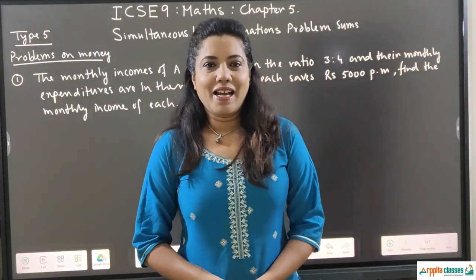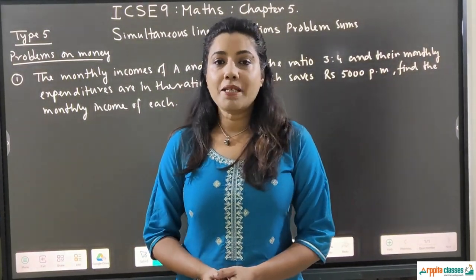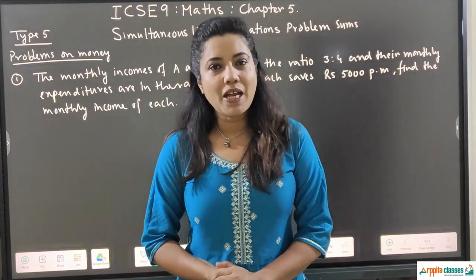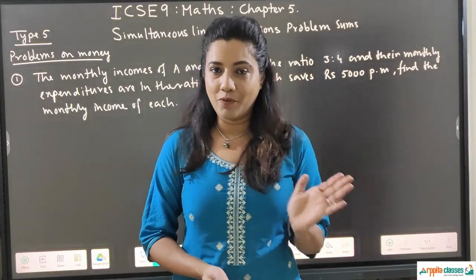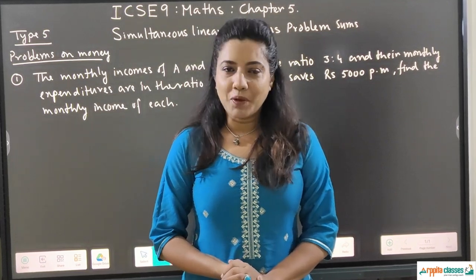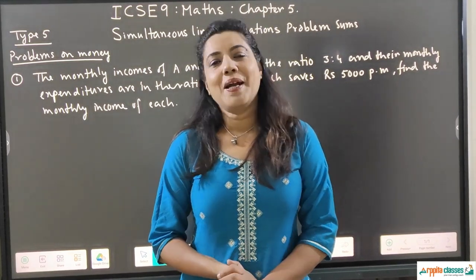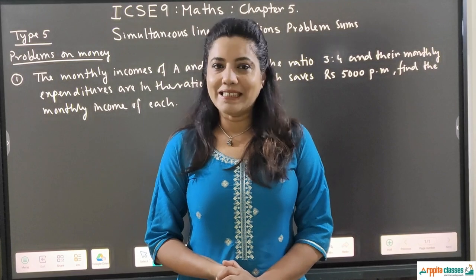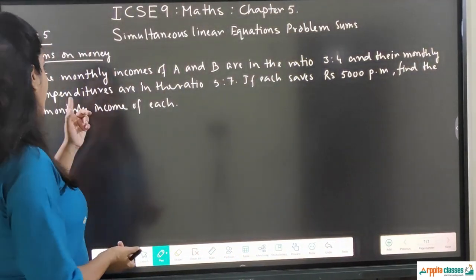Hello my dear students, I am again back with ICC 9th maths. Chapter 9 is simultaneous linear equations. We started doing problem sums and in the previous videos I have covered type 1, type 2, type 3 and type 4, all based on numbers. Today I am going to start with type 5, that is problems based on money. My name is Arpita Banerjee and you are watching Arpita Classes. Let's get started — problem based on money, type 5.